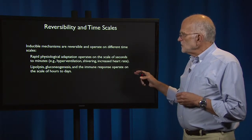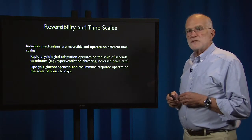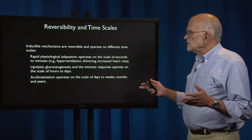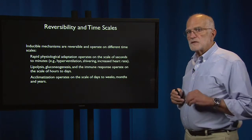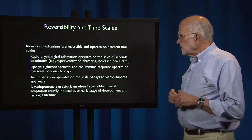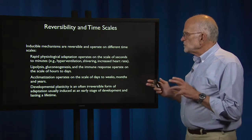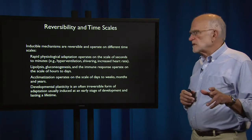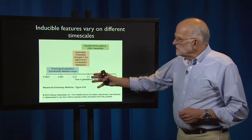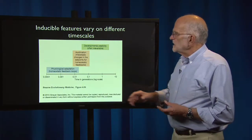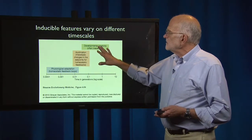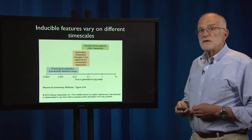Lipolysis, gluconeogenesis, and the immune response operate on the scale of hours to days. Acclimatization operates on the scale of days to weeks, months, and years — it can take quite a while to get used to walking at high altitude. Developmental plasticity is an often irreversible form of adaptation that is usually induced at an early developmental stage and then lasts for a lifetime. Physiological adaptation is fast, acclimation is intermediate, and developmental plasticity is slow and often irreversible.